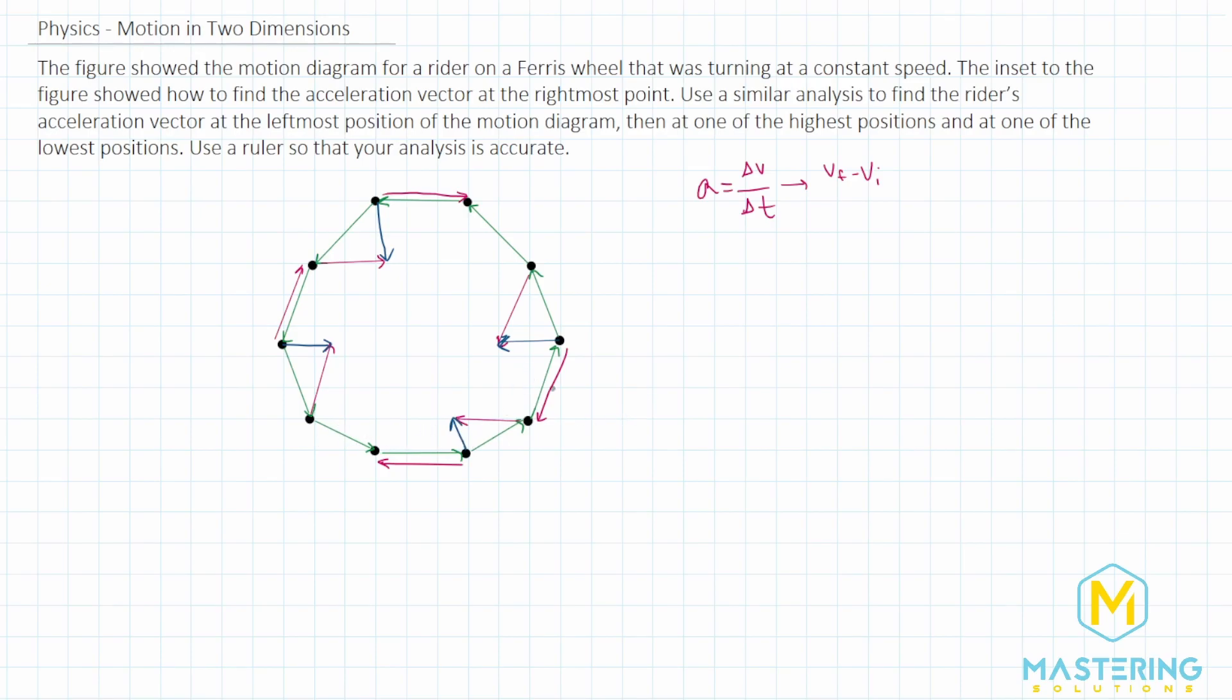So you can see that if we did this for all of them, all of them would be pointing towards the center of the circle, which goes to show you how acceleration is pointing towards the center. Because the change in the two, just like the mathematical representation of it, gives us the acceleration. So the blue arrows are the acceleration for the highest, lowest, left, and right points on this Ferris wheel.